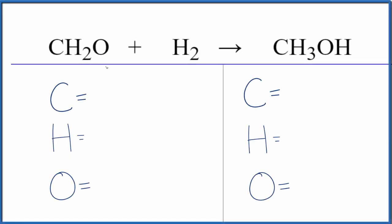So if you're asked to balance this equation, here we have CH2O plus H2, and that gives us CH3OH. This is formaldehyde, we have hydrogen gas here, then we have methanol.